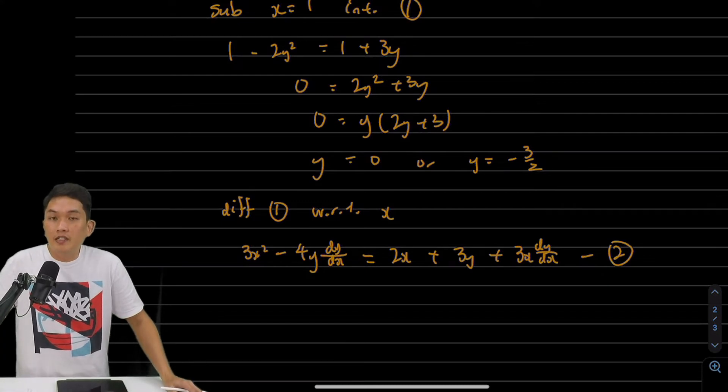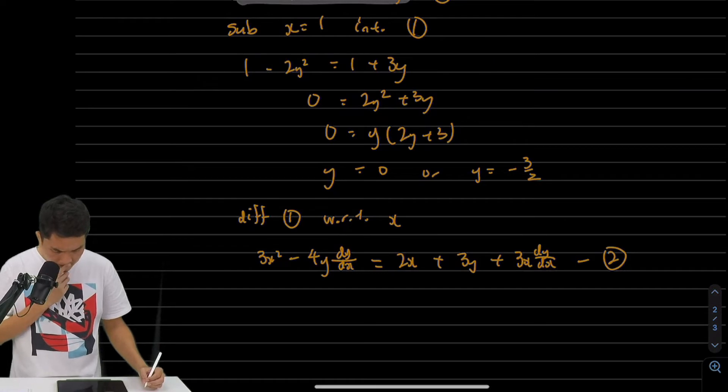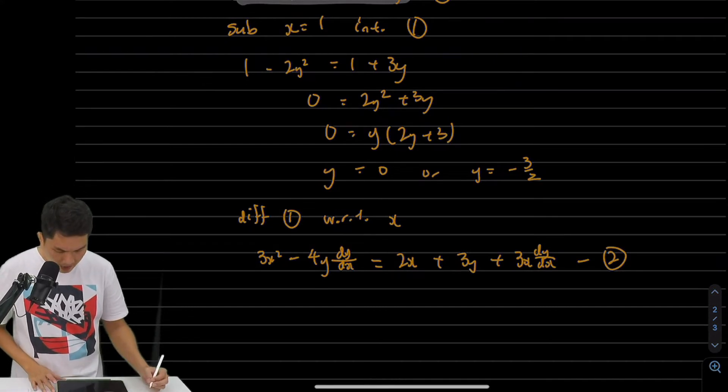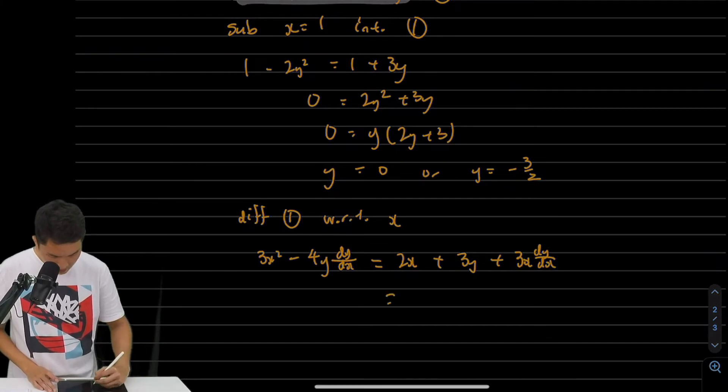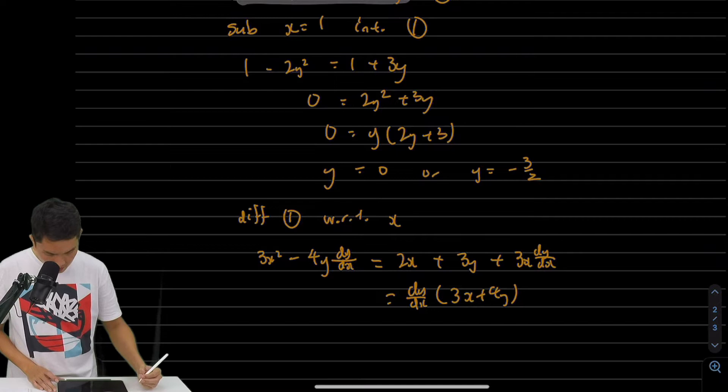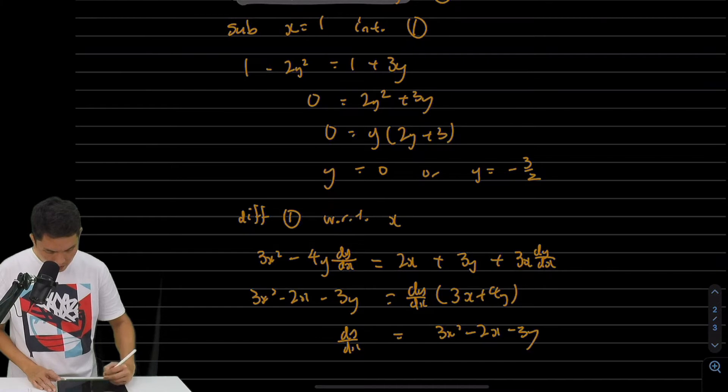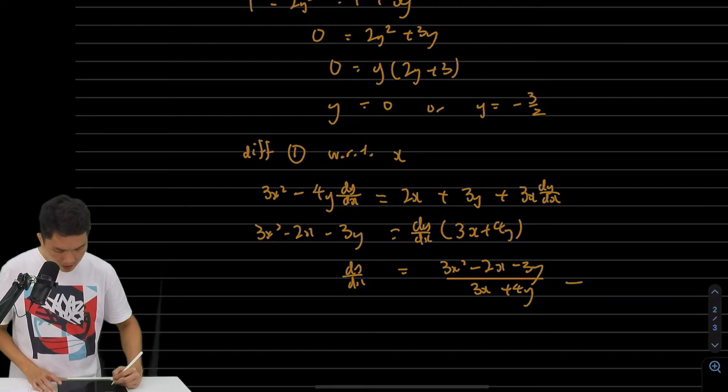I'll call this equation number 2. Then I can find the gradient at points P and Q by substituting the coordinates. But before that, it's a good idea to make dy/dx the subject of the formula. So rearranging: dy/dx(3x + 4y) = 3x² - 2x - 3y, which gives dy/dx = (3x² - 2x - 3y)/(3x + 4y). Let's call this equation 2.